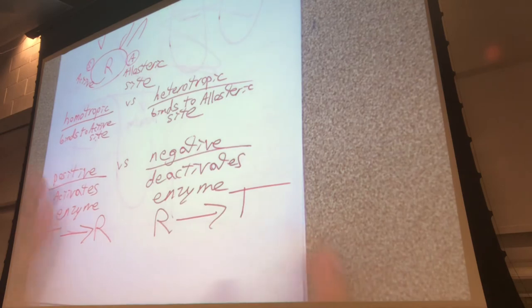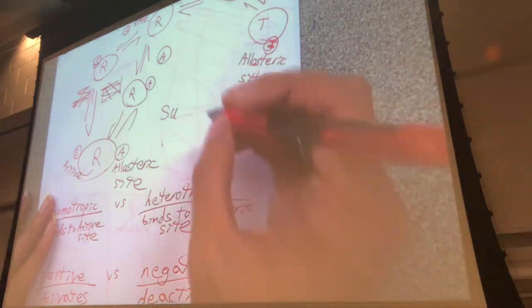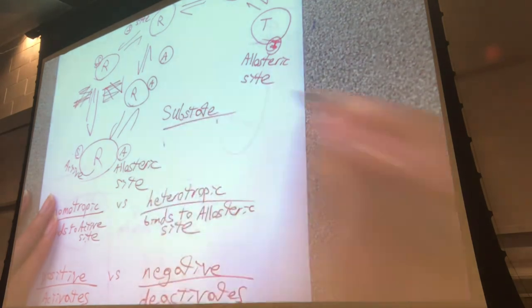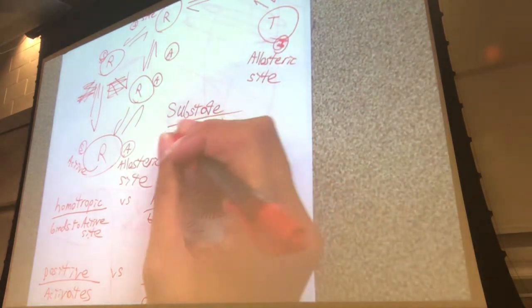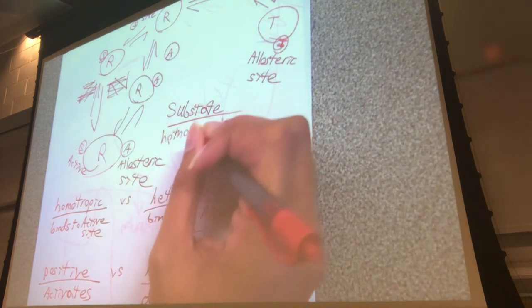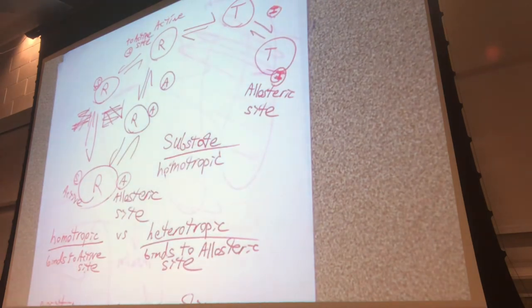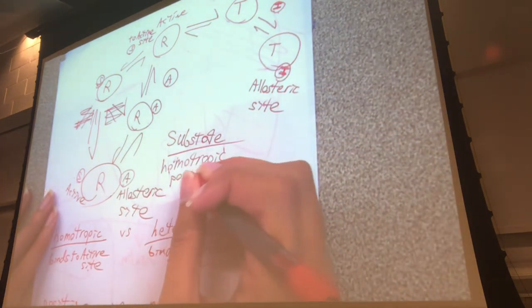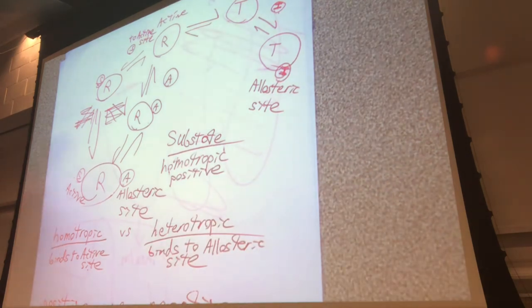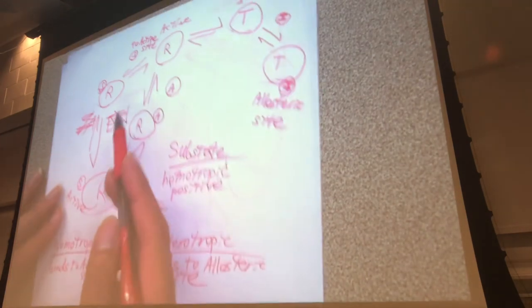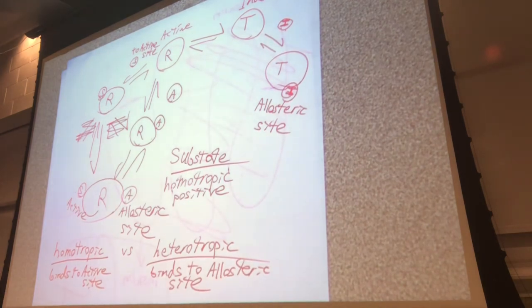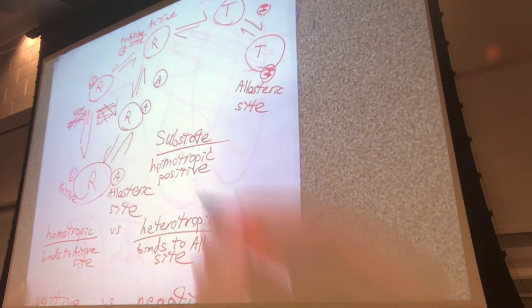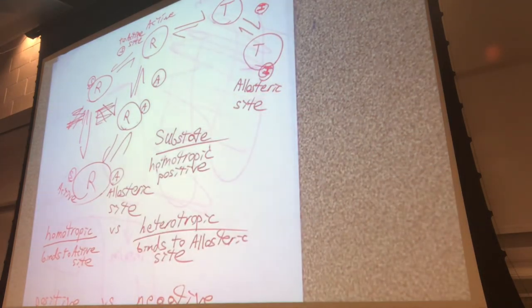Let's apply these terms. What combination of words describes each effector? Starting with the substrate: where did it bind? Active sites. So a substrate is a homotropic effector. Did binding of the substrate activate or deactivate the enzyme? It activated it. So it is both homotropic and positive — a positive homotropic effector. The positive effector indicates the substrate activated the enzyme; homotropic indicates it went to the active site.